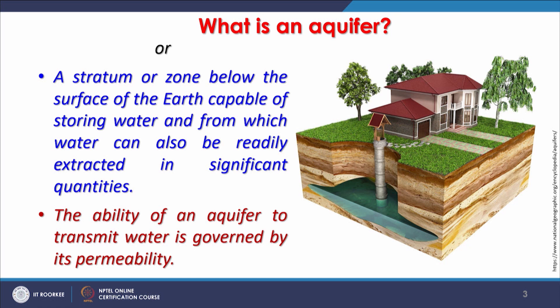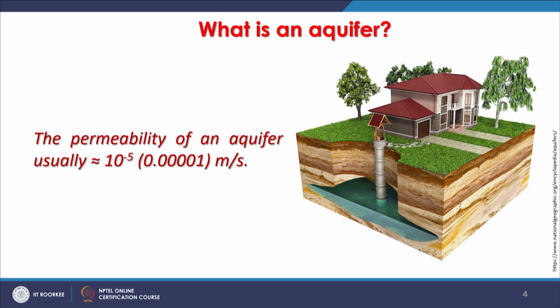This definition is quite befitting. The ability of an aquifer to transmit water is governed by its permeability. If an underground layer is saturated with water but does not have good permeability, it is of no use. High permeability means water will move at very high speed. The movement of water — transmissivity — is generally very slow, depending on rock type, saturation, thickness, and many other factors, which we will discuss separately in detail.